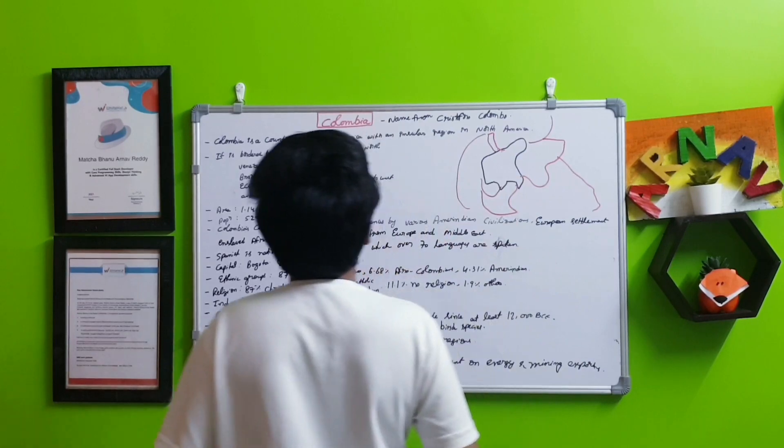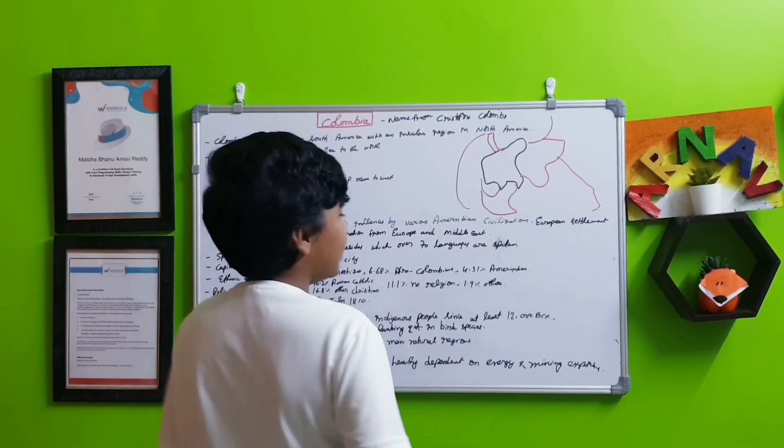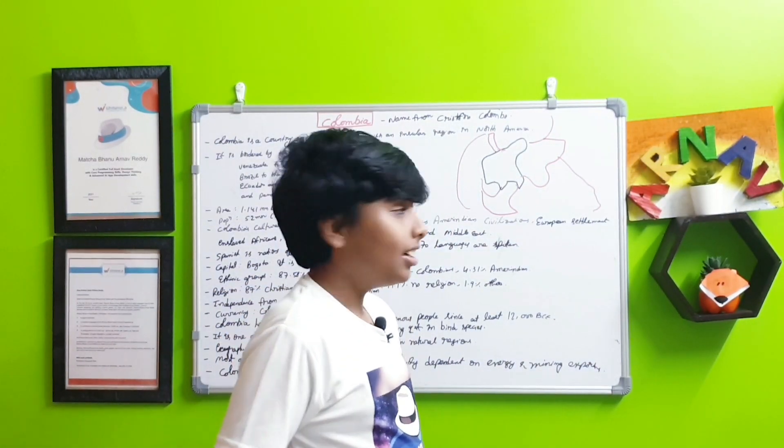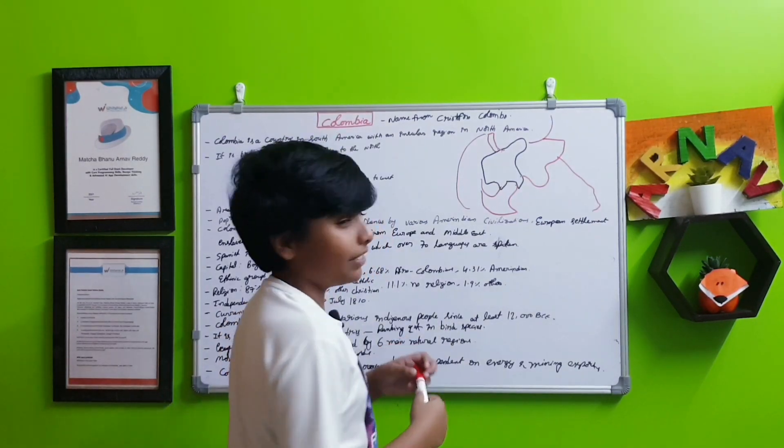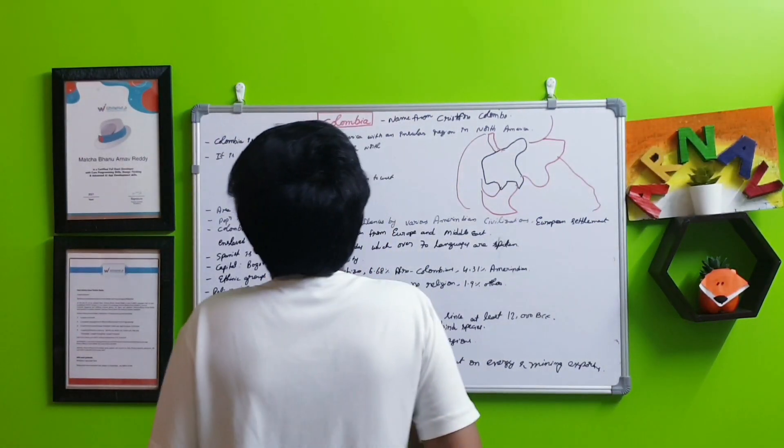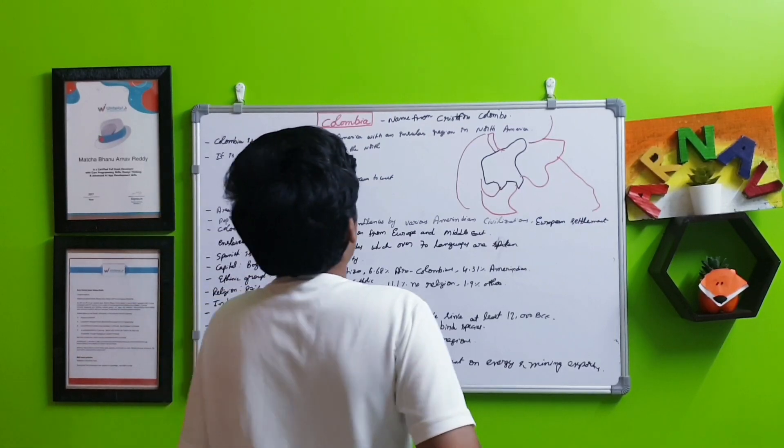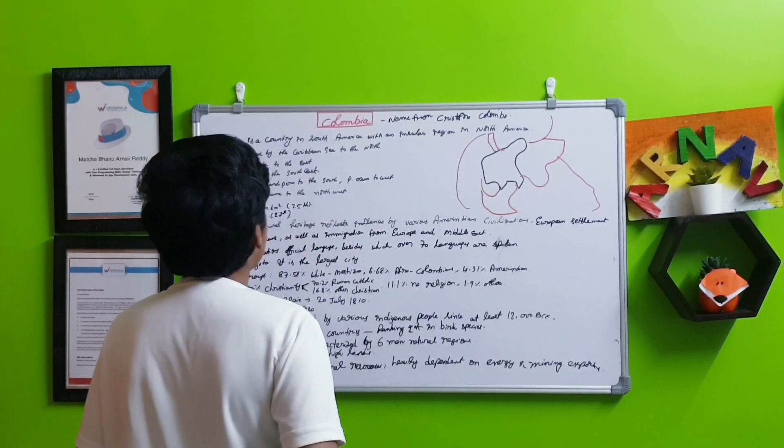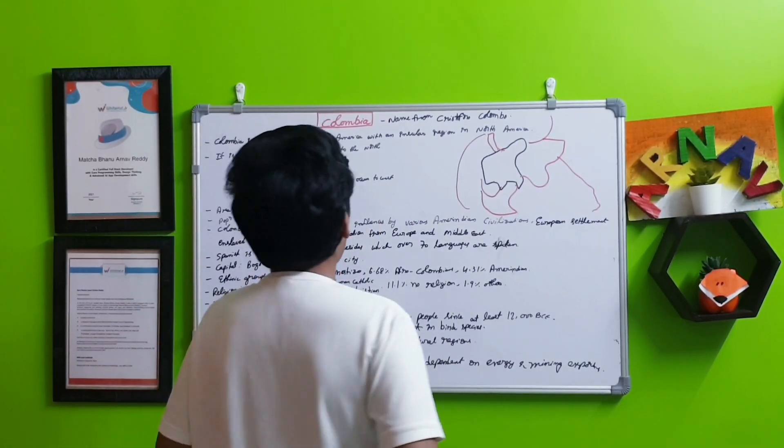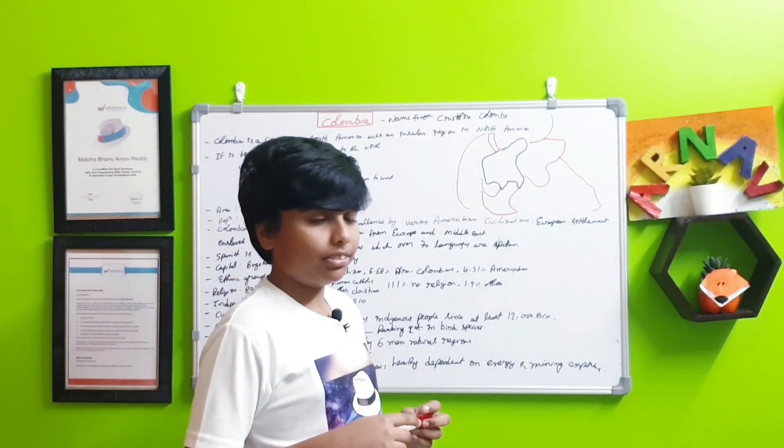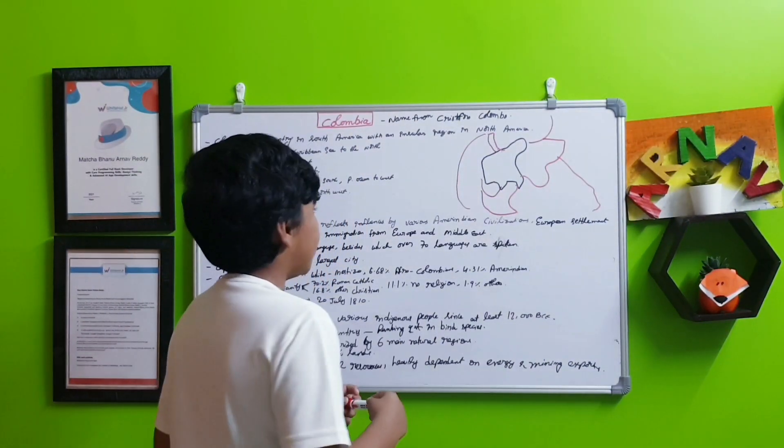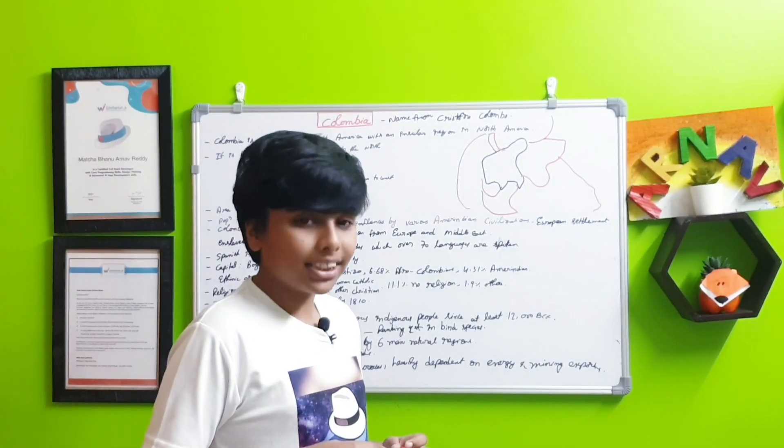So those are the neighboring countries of Colombia. Panama is to the northwest, the Caribbean Sea on the northeast, Venezuela on the east, Brazil to the southeast, Ecuador and Peru to the south, and the Pacific Ocean to the west of Colombia.